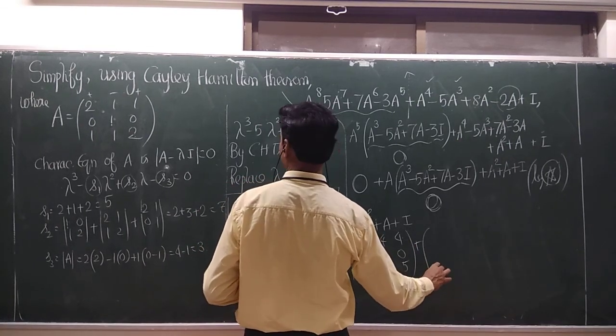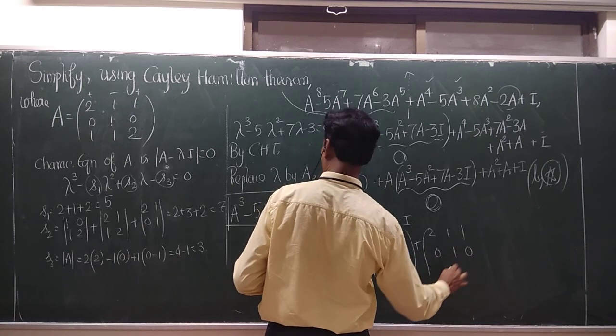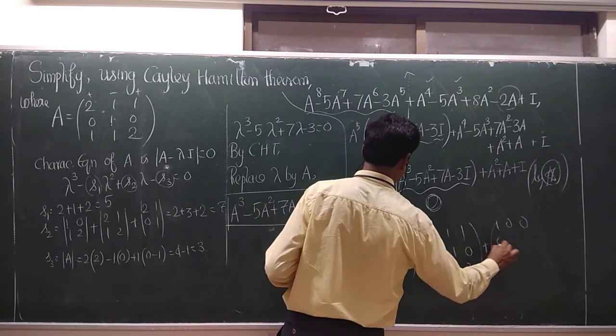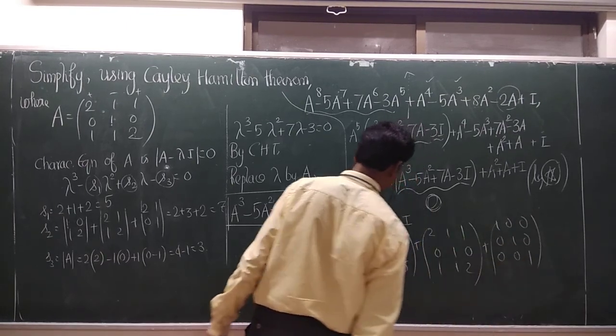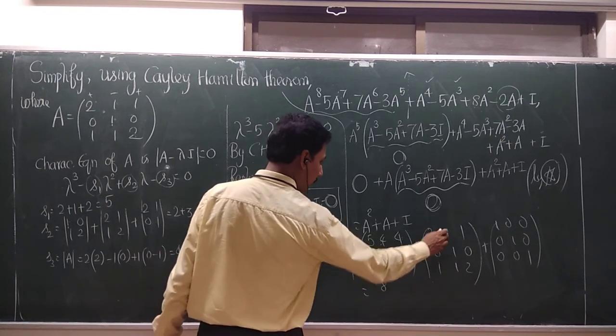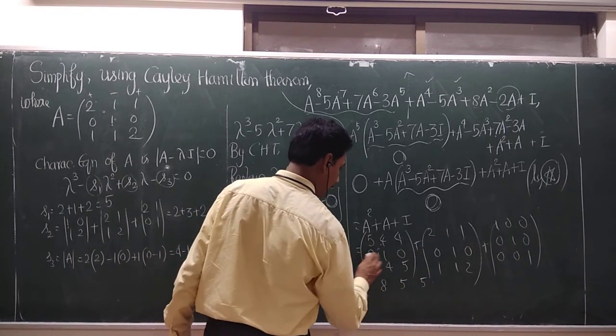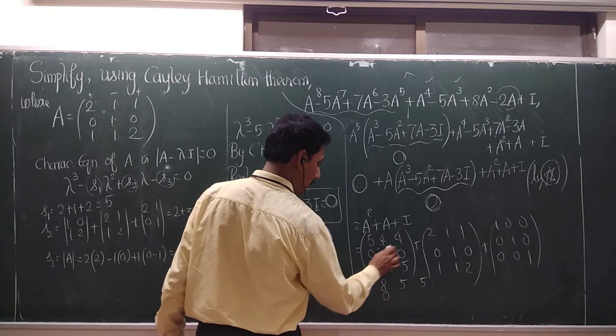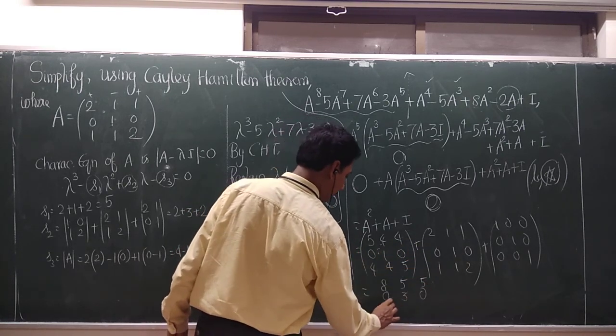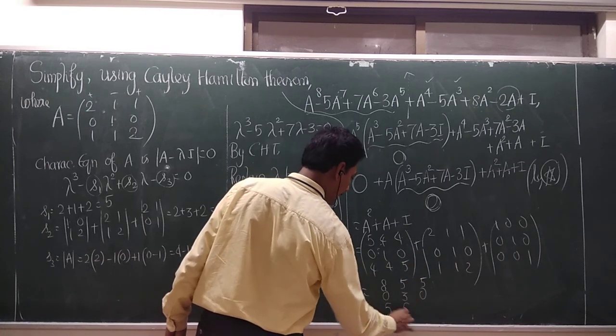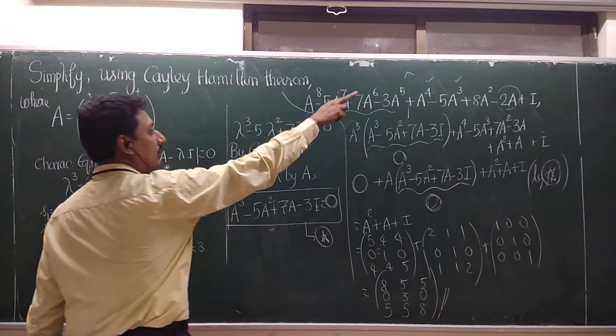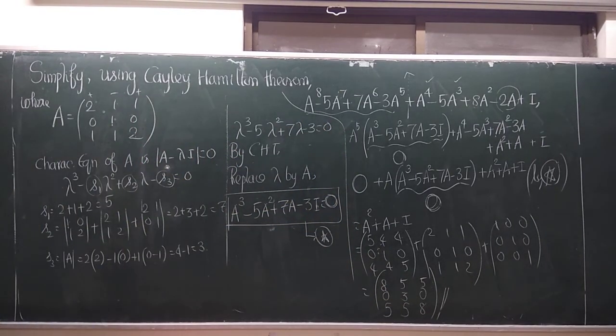And A is the given matrix: 2, 1, 1, 0, 1, 0, 1, 1, 2. And finally the I, I is the identity matrix. A is the same order, 3 by 3. So 5 plus 2 plus 1 is 8. 4 plus 1 is 5. 4 plus 1 is 5. 0 plus 0 plus 0 is 0. 1 plus 1 plus 1 is 3. 0 plus 0 plus 0 is 0. 4 plus 1 is 5. 4 plus 1 is 5. Then 5 plus 2 plus 1 is 8. So this is the value of this lengthy matrix expression.